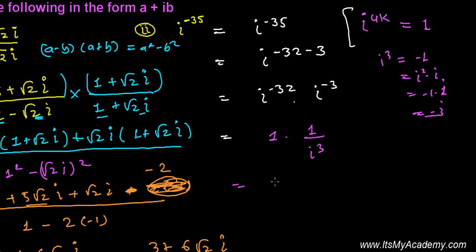Next, we'll write 1 over -i, but we need it in the form a + bi. So you can multiply by i over i.